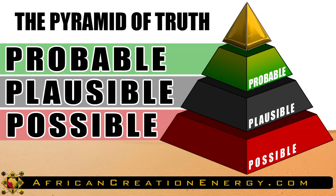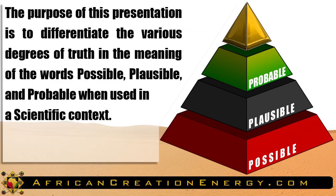Possible vs. Plausible vs. Probable in the Pyramid of Truth. The purpose of this presentation is to differentiate the various degrees of truth and the meaning of the words possible, plausible, and probable when used in a scientific context. In the common use of these words, in layman's terms, these words are used interchangeably. However, in the scientific context, each of these words has a distinct meaning and implication when it comes to determining truth and accuracy.